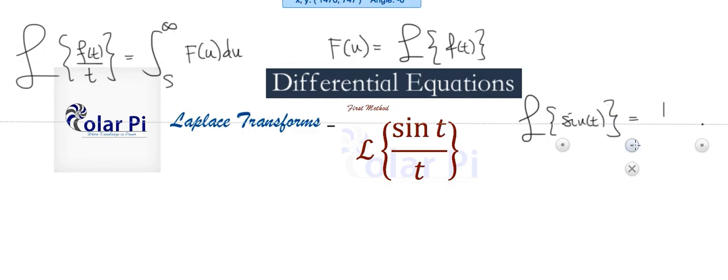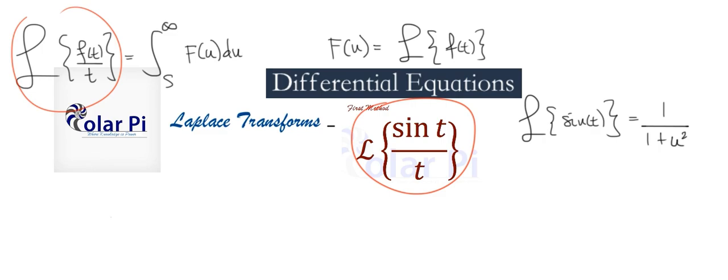So the Laplace transform for sine t is 1 over 1 plus u squared, and so this is what we have to integrate, 1 over 1 plus u squared from s to infinity, to come up with the Laplace transform for sine t over t. Because since f of t is sine t, sine t over t would be this integral here, where F of u would be the Laplace transform of sine t, which is this guy here.